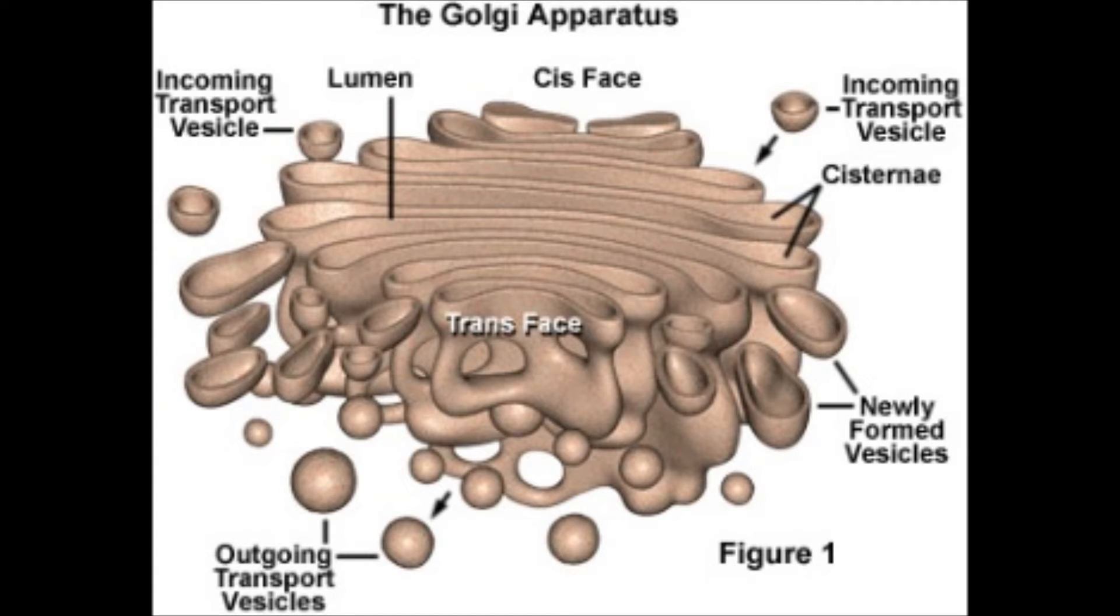Golgi apparatus is thin and round, with two layers of membrane. It was named after a scientist, bringing fame to his name. Complex molecules are what it stores, keeping it safe and sound. Until they are needed for other things, during which they travel around.